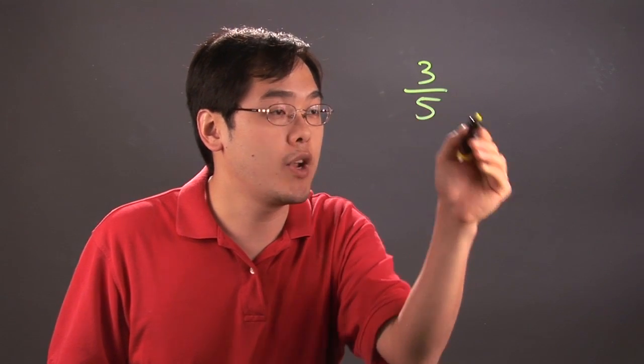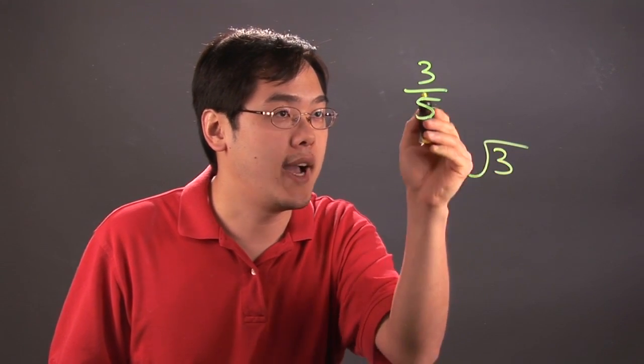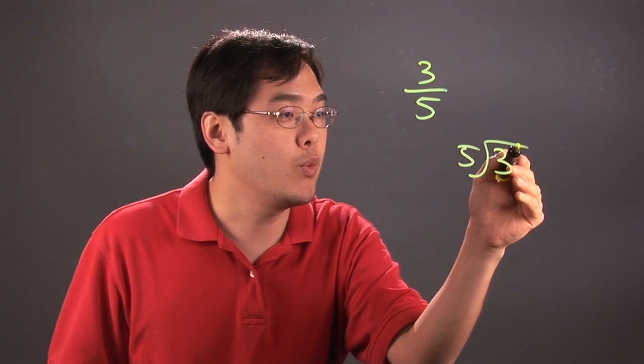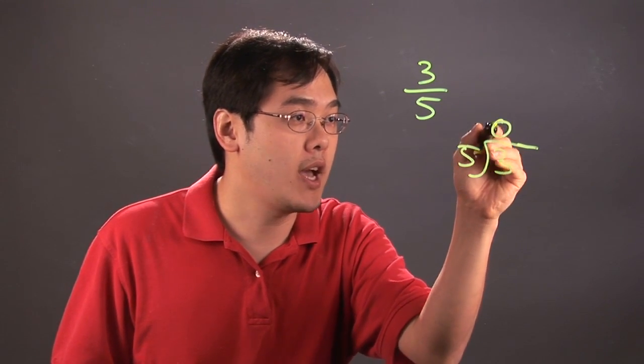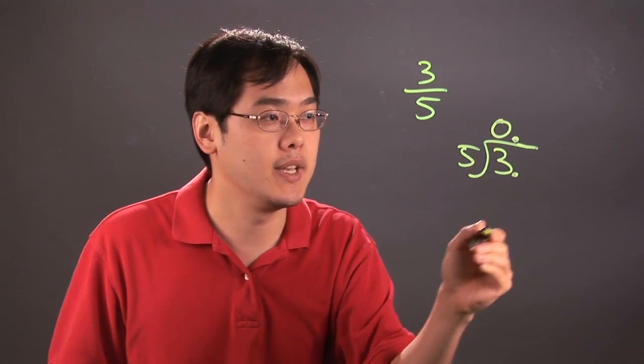The numerator 3 is on the inside, the 5 is on the outside, and we know 5 does not go into 3. So that's 0 times, and that's where you have to put the decimal in.